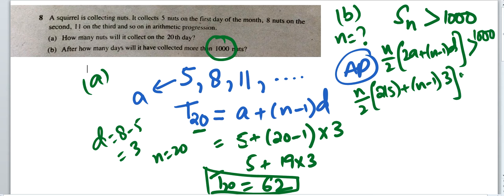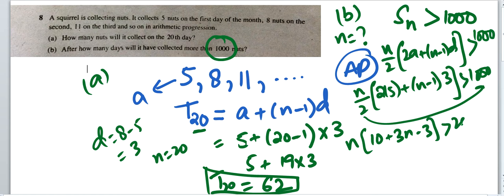I'll simplify this. Bringing the 2 over makes the equation: (n/2)[10 + 3n - 3] greater than 1000. That becomes (n/2)(3n + 7) greater than 1000, which gives us 3n² + 7n greater than 2000.